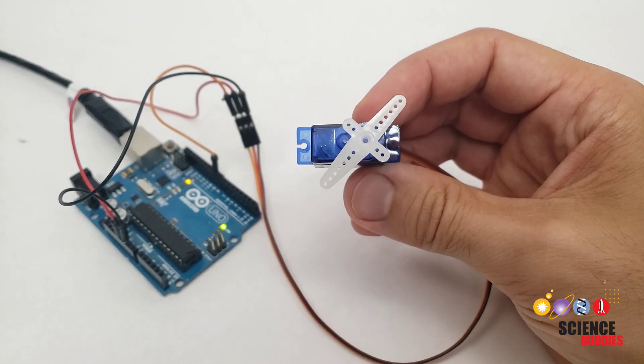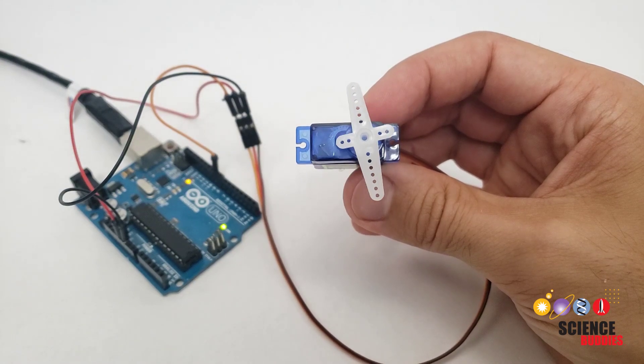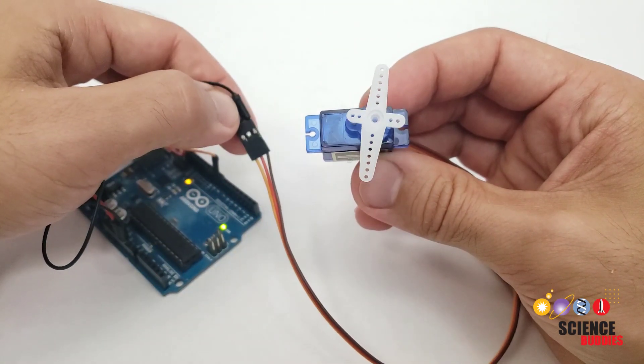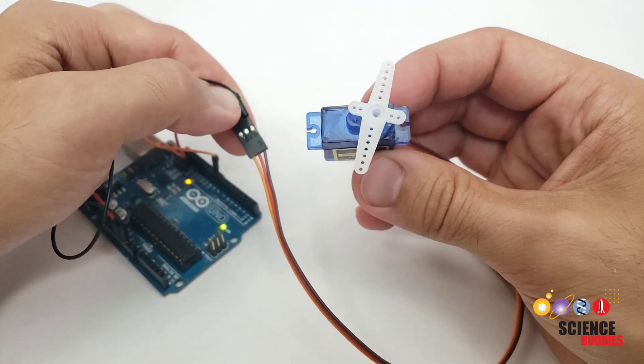You will need to check your servo's datasheet to find out the actual range. You can also double check the color coding for the wires on the datasheet as that may vary between different manufacturers.